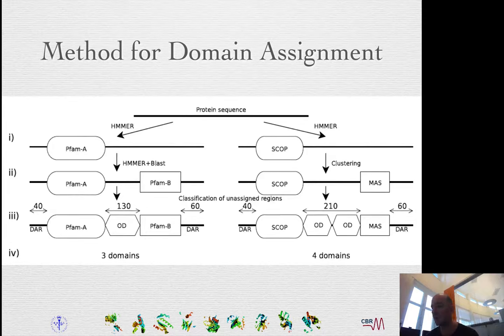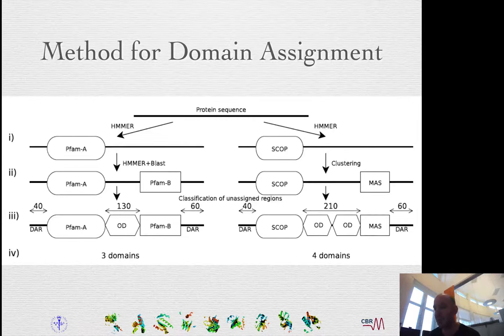We also have some unassigned regions in between. One question is: when should we assign an unassigned region to be a domain? These are called orphan domains — basically all domains that are very rare and rather large. The easiest way is to use a length cutoff.